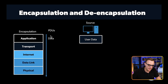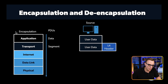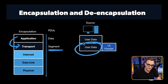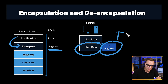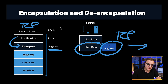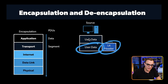The idea is that we have an application — could be a web browser or some other application — that wants to send data into the network. We have our user data. When the data is sent from the application layer to the transport layer, it's broken up into segments depending on how big the data is. A piece of the user data is then encapsulated with a layer four header. If we're using TCP at layer four, TCP running locally on the source computer needs to talk to TCP on the other side.